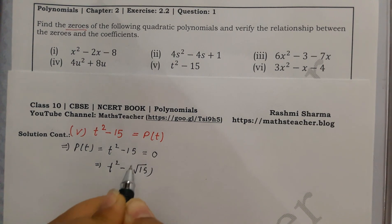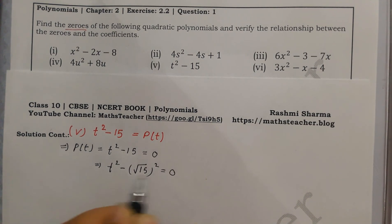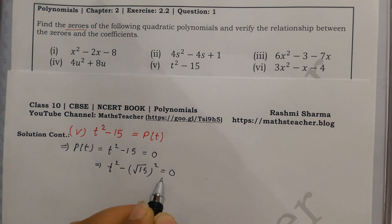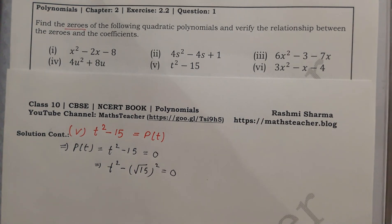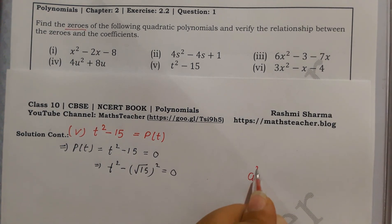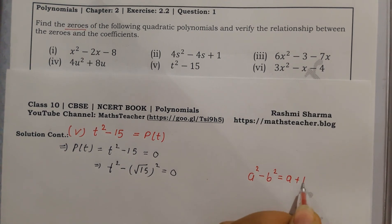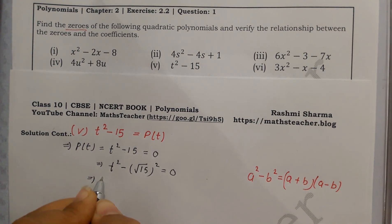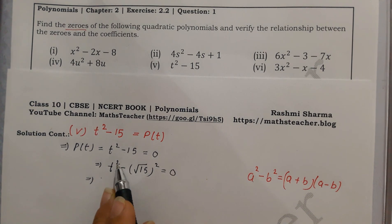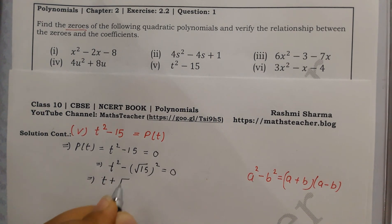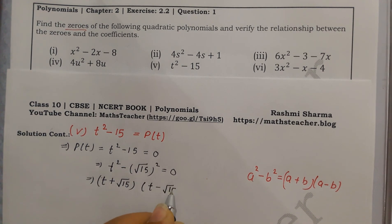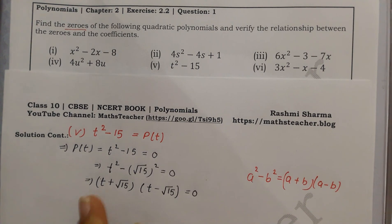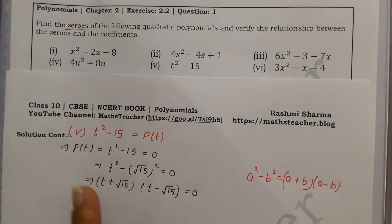Since a squared minus b squared equals (a plus b)(a minus b), we apply this identity. Here a is t and b is under root 15, giving us (t plus under root 15)(t minus under root 15) equals 0. These are our two factors, as expected for a quadratic equation.